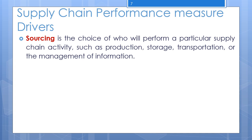Looking at the role of sourcing in competitive strategy: sourcing decisions are crucial because they affect the level of efficiency and responsiveness the supply chain can achieve. In some instances, a company outsources to a responsive third party when it is too expensive to develop that responsiveness on their own — for example, outsourcing next-day delivery to a few package carriers because it is too expensive for a firm to develop that capability independently. In other instances, companies keep processes in-house to maintain control, since not everything can be outsourced.